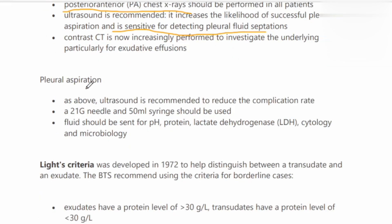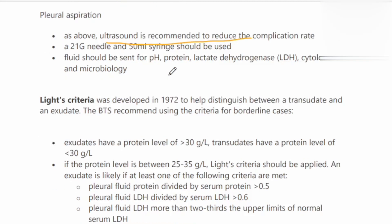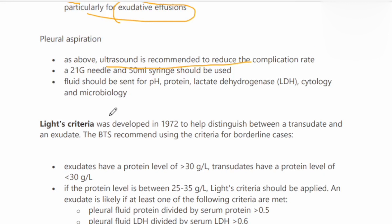Contrast CT is performed for exudative effusions. Pleural aspiration gives some idea about the underlying pathology. A 21-gauge needle is used and about 50 ml is sampled, ultrasound-guided to reduce the complication rate. Because there may be multiple dense adhesions or septa within the pleural effusion, passing a needle without guidance can cause further trauma. The fluid should be sent for pH, protein, lactate dehydrogenase, cytology, and microbiology.